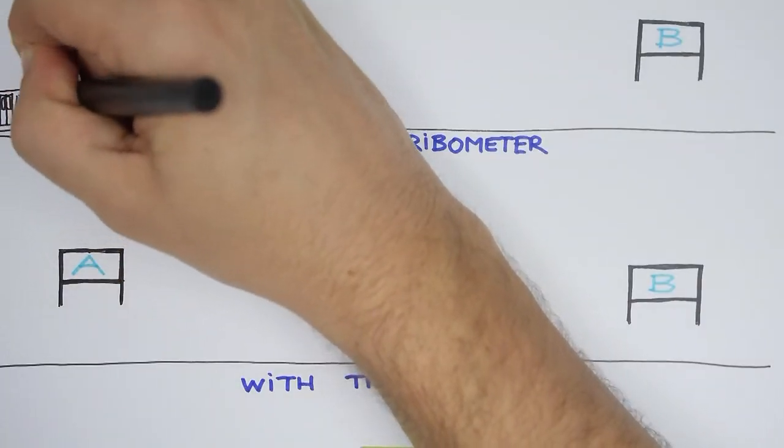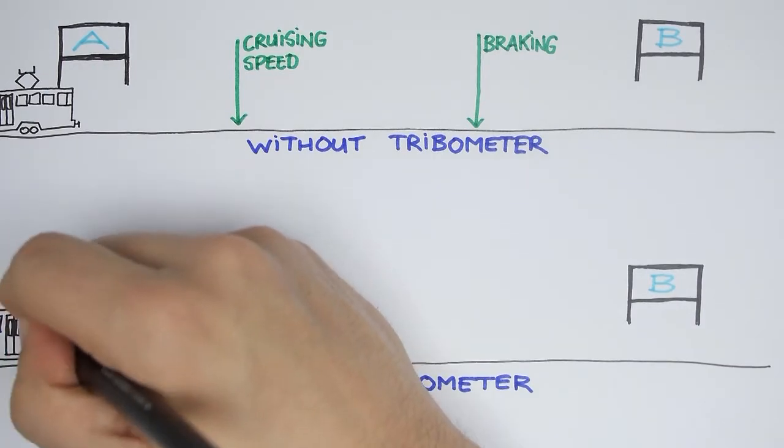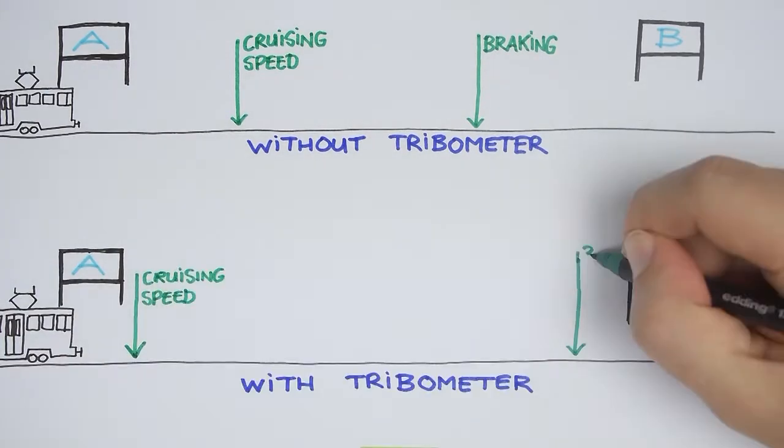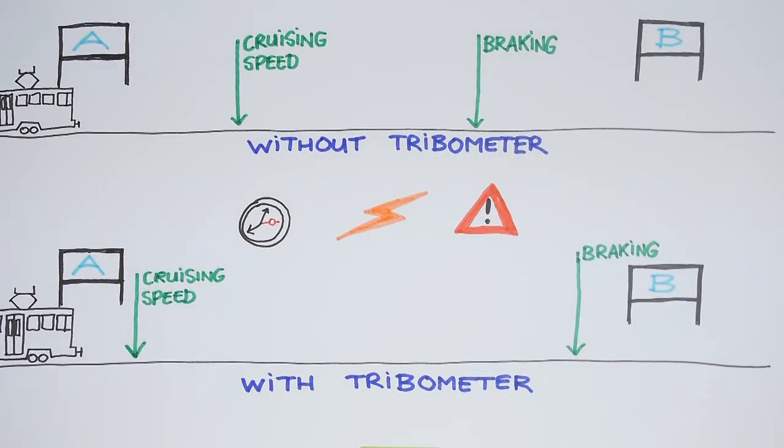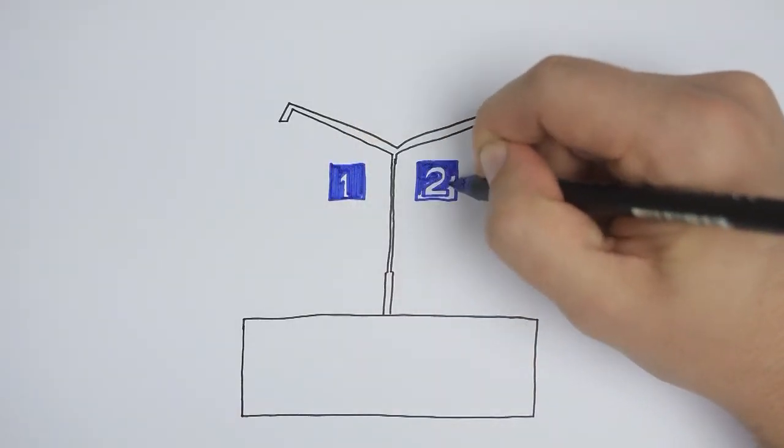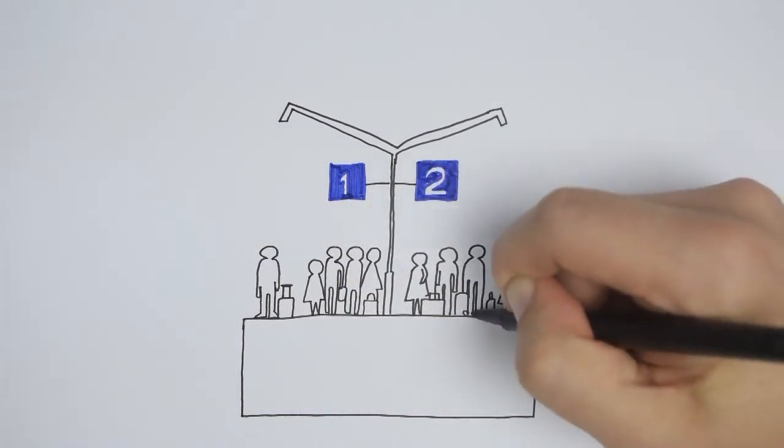By optimizing the driving style, trains hit their cruising speed earlier and combined with more efficient braking, this greatly increases punctuality, energy efficiency and safety. Faster trains also implies the same amount of trains can carry more people, increasing fleet capacity.